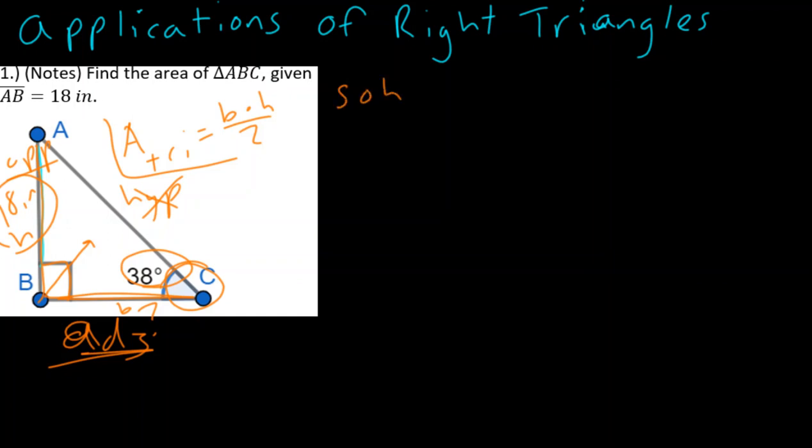When I go to write out Soh-Cah-Toa, well, since I care about the A and the O, that means I must be using my tangent function. And so now we have tangent of 38 degrees is equal to the opposite, 18, over the adjacent. Now, from here, guys, it's pretty simple.